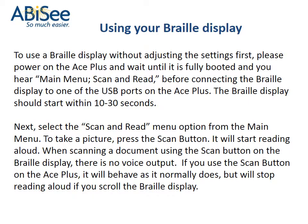To use a Braille display without adjusting the settings first, please power on the Ace Plus and wait until it is fully booted and you hear Main Menu, Scan, and Read, before connecting the Braille display to one of the USB ports on the Ace Plus. The Braille display should start within 10 to 30 seconds. Next, select the Scan and Read menu option from the Main Menu. To take a picture, press the Scan button.